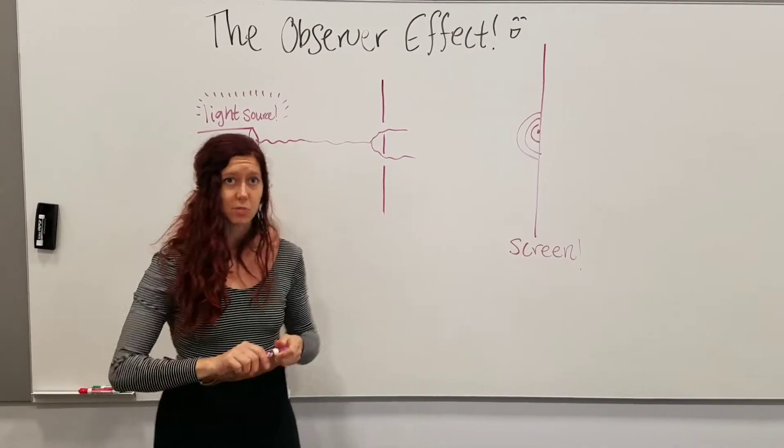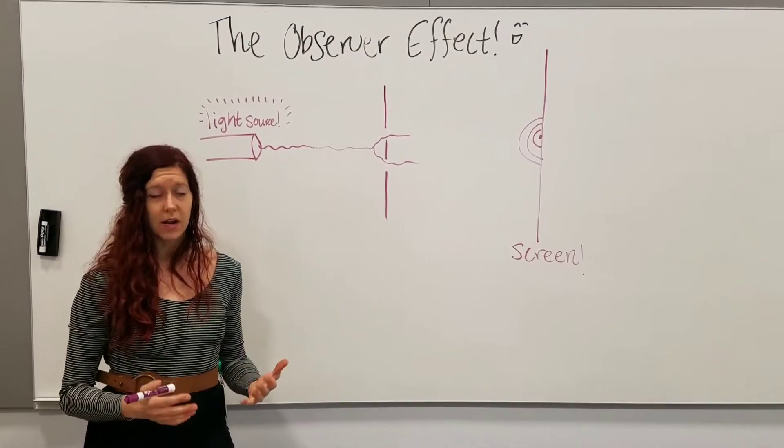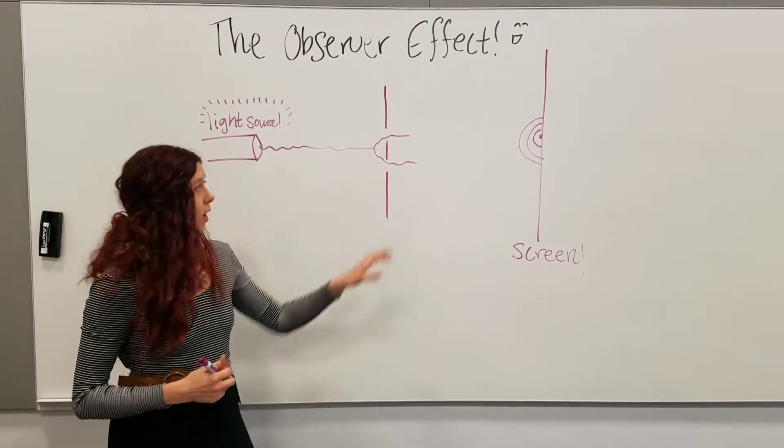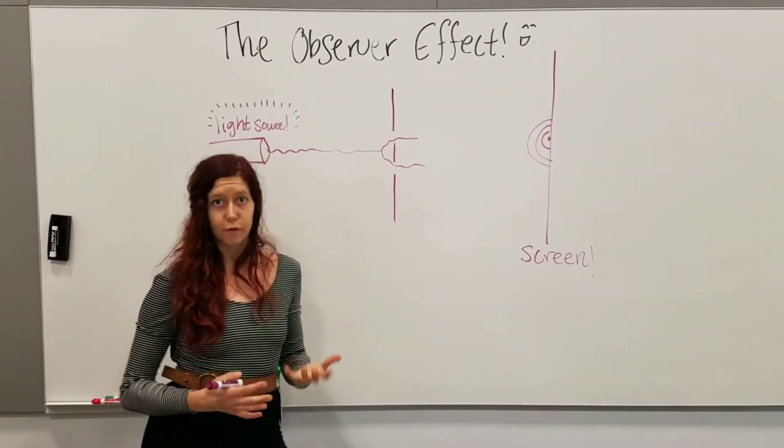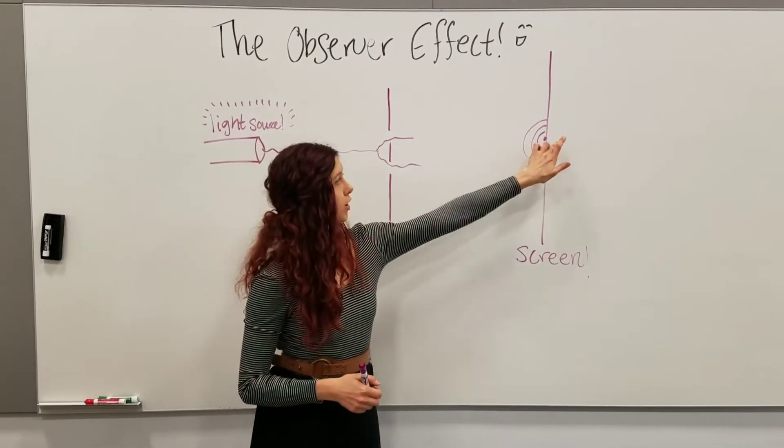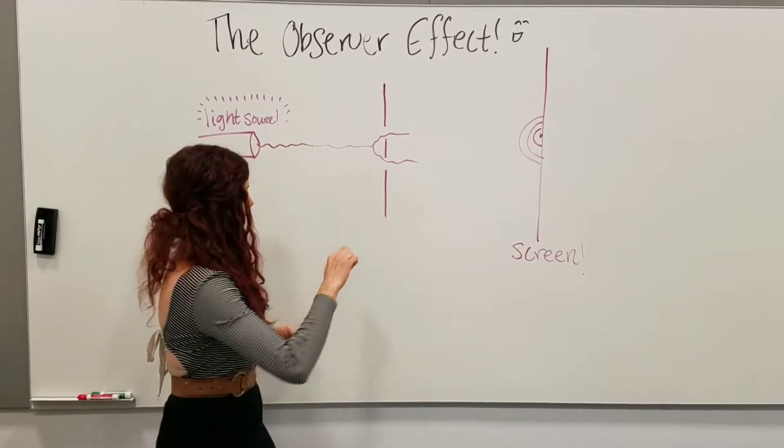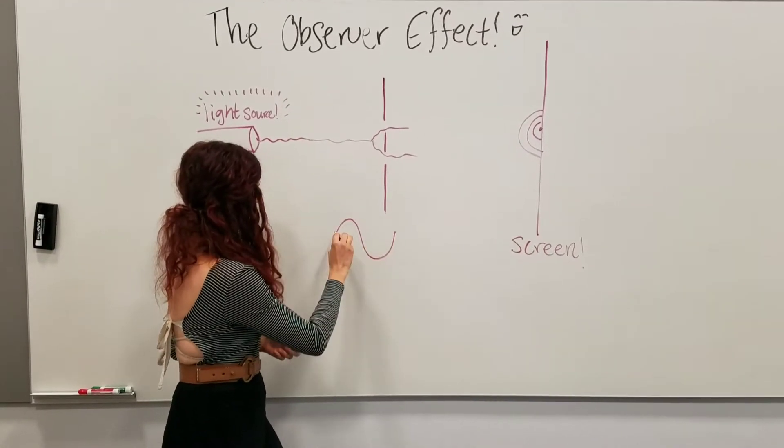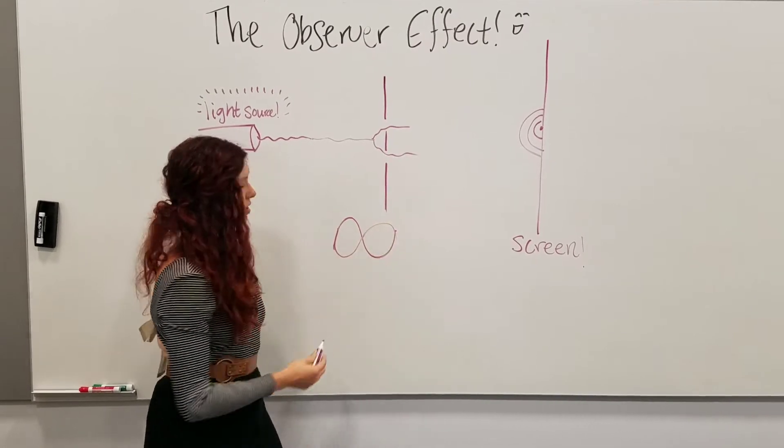And the reason why that happens is because the light acts as a wave and it interferes. These two waves, when they recombine, they interfere with each other, and the dark spots they cancel out. So you have the wave like this, going with the wave like this, so you get a dark spot.